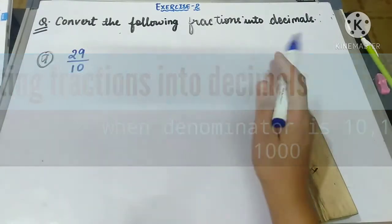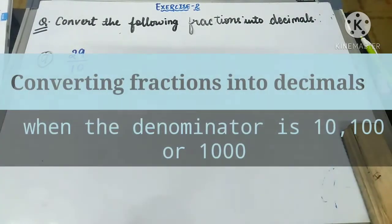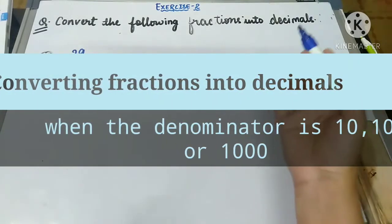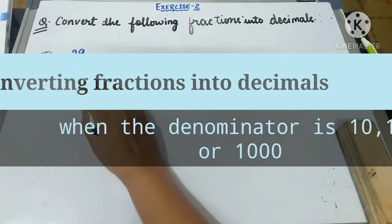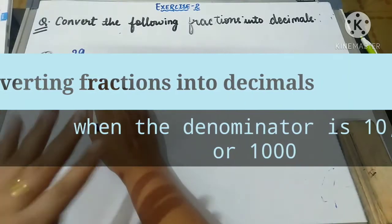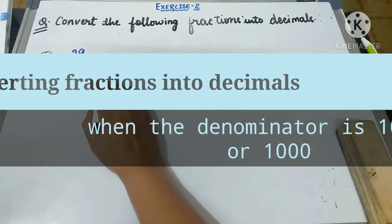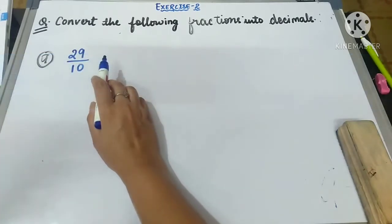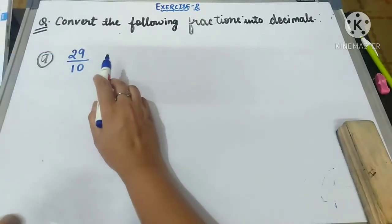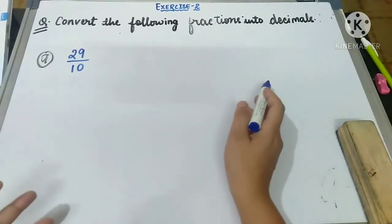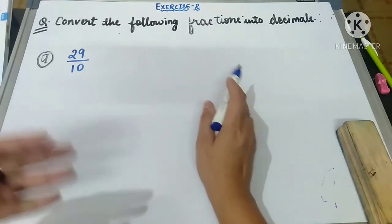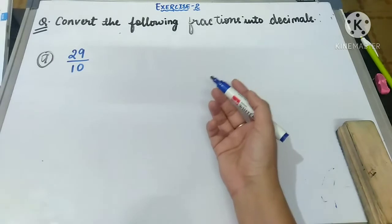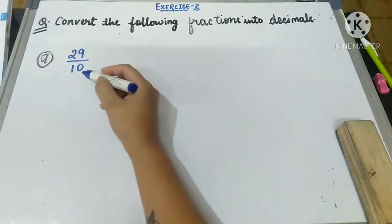Now let us see how to convert fractions into decimals. If a fraction is given, how can we convert it into a decimal? There are three cases. The first case is when the denominator of a fraction is 10, 100, or 1000 — then it is very easy to convert, because we have already studied decimal fractions.